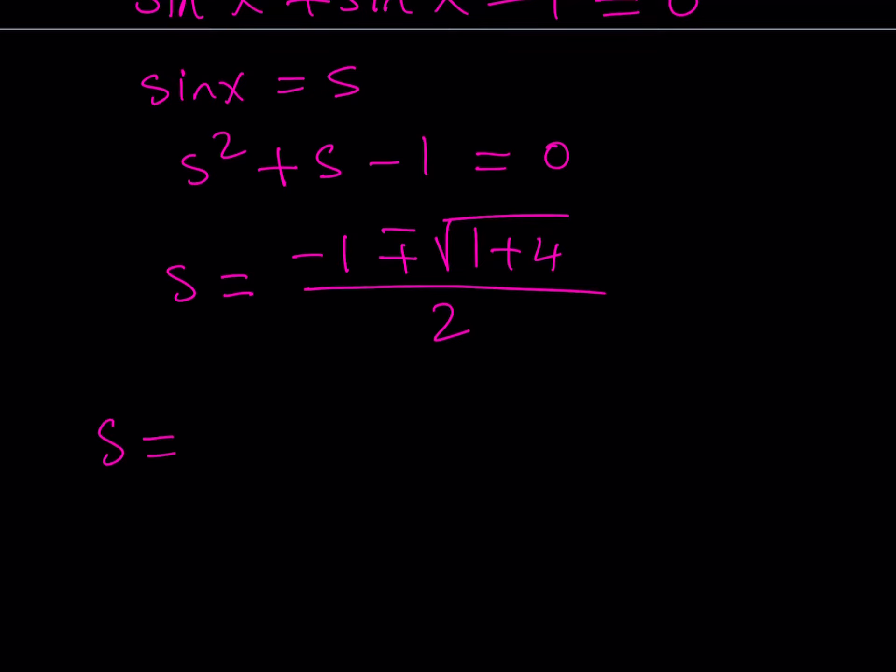That gives us square root of 5 where the golden ratio kind of comes in. From here we get two solutions: negative 1 minus the square root of 5 over 2 and negative 1 plus root 5 over 2.